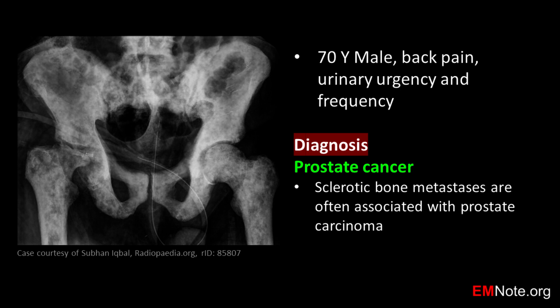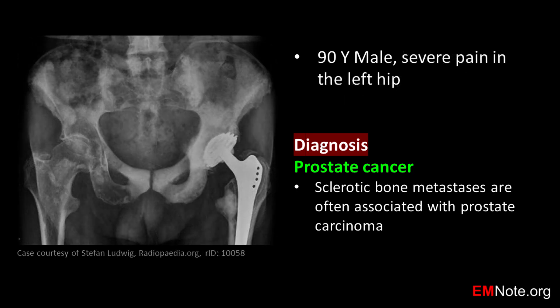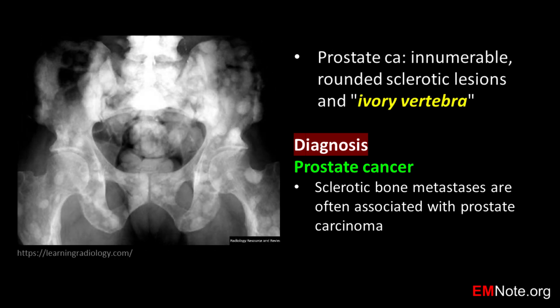Sclerotic bone metastases are often associated with prostate carcinoma. This is another case of sclerotic bone metastases associated with prostate cancer in a 90-year-old male presenting with severe pain in the left hip. Ivory vertebra refers to a radiographic finding where affected vertebrae have sclerotic bone metastases associated with prostate cancer.